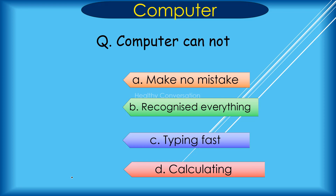Question: A computer cannot A. Make no mistake, B. Recognize everything, C. Typing fast, D. Calculating. Correct answer is B. Recognize everything.